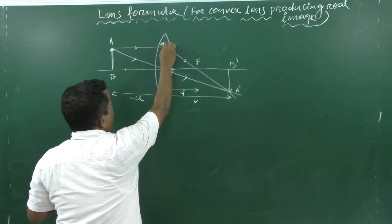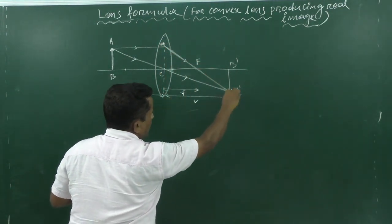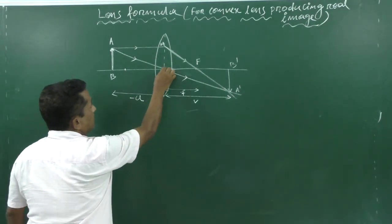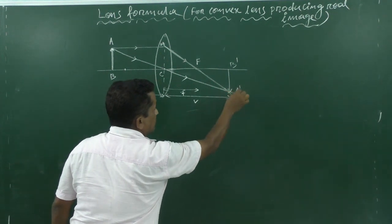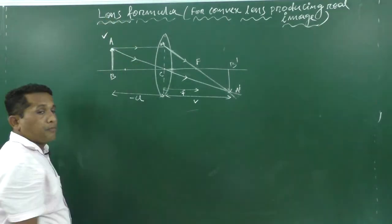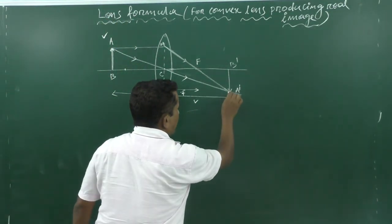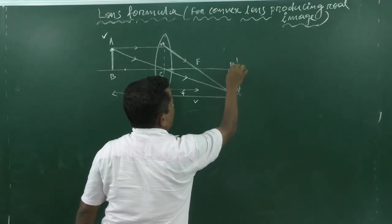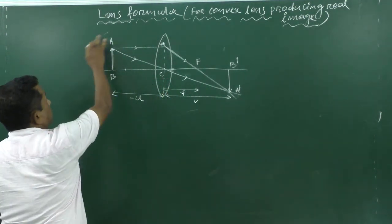One ray is parallel to the principal axis — that is point AB — and another goes through the optical center. The parallel ray after refraction goes through the focus, and the ray through the optical center goes undeviated. Where they intersect is point A dash, which is the image of point A. From A dash, draw a perpendicular to the principal axis to get point B dash.